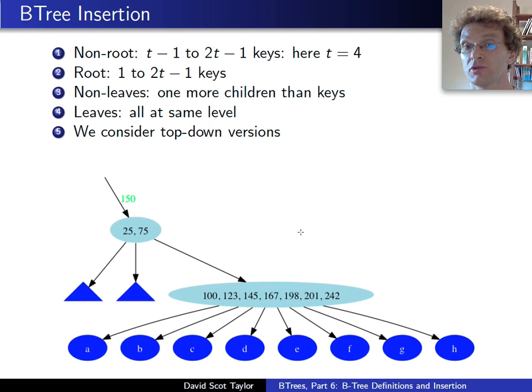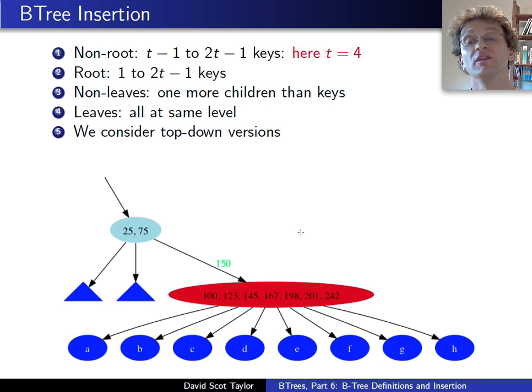So we're going to insert a 150. It's a top-down version. So when we do that, we look at our root. Is our root full? It's not full. Great. We can step to the next node. We look into that node. Is that node full? Yes, it is. It has seven keys. It's totally full.